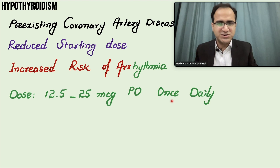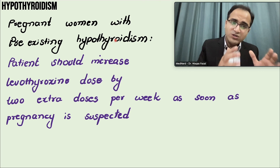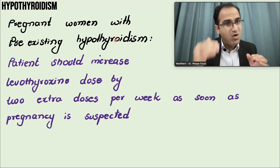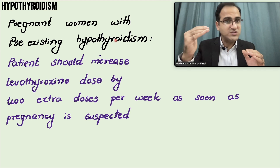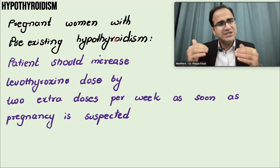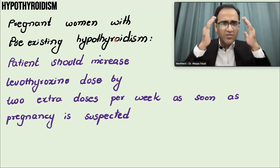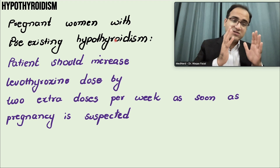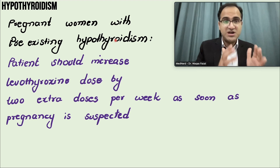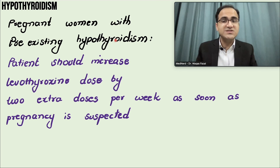Regarding pregnancy and hypothyroidism: if a female with diagnosed hypothyroidism becomes pregnant, increase the dose of levothyroxine immediately. Levothyroxine is critical for fetal brain development. If the dose is not increased in a hypothyroid pregnant patient, the child will have intellectual disability and impaired brain development.